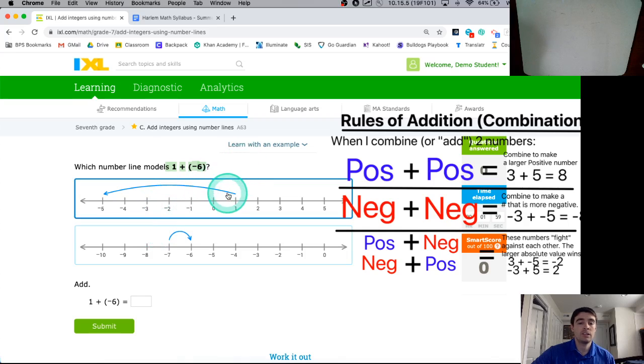So, not only is this number line helping me represent 1 plus negative 6, visualize it. It's telling me, hey, by the end of it, if I start at 1 and I take 6 away, I will be at negative 5.